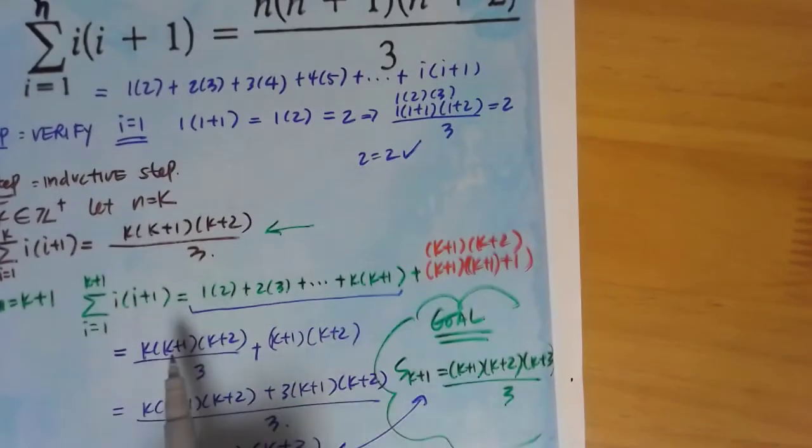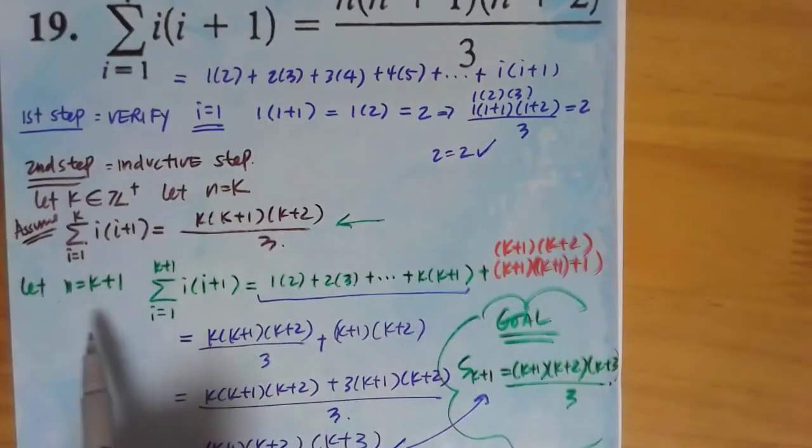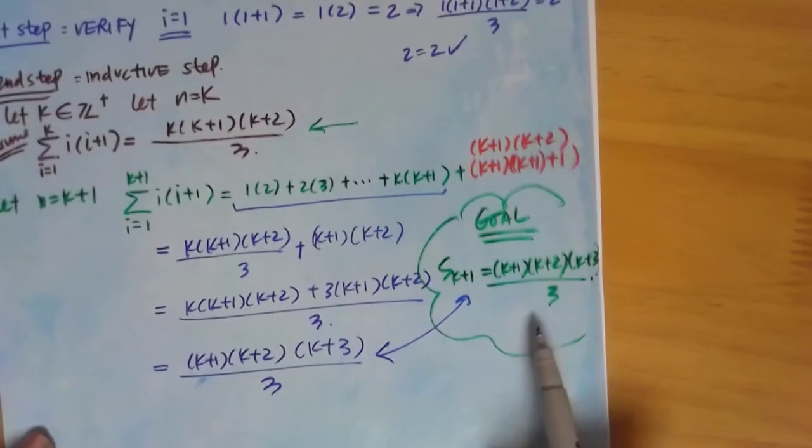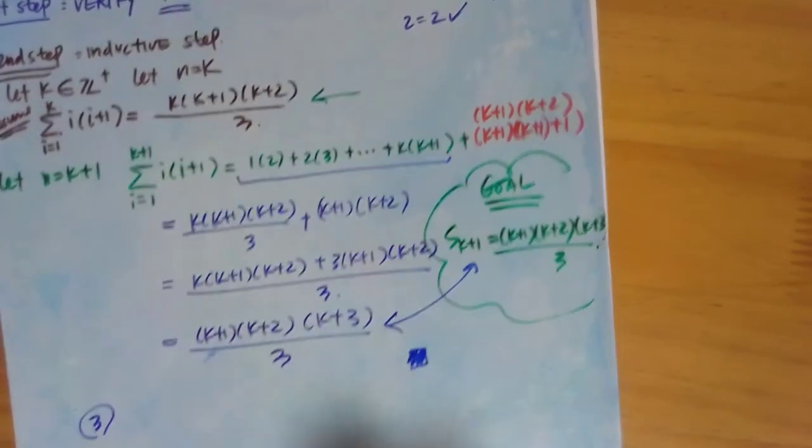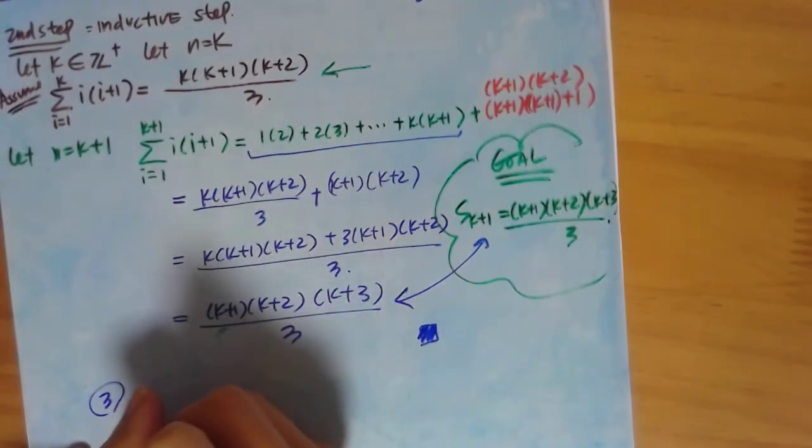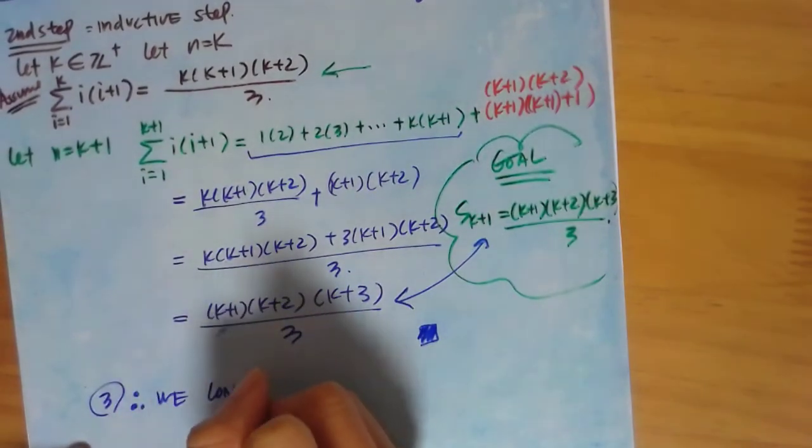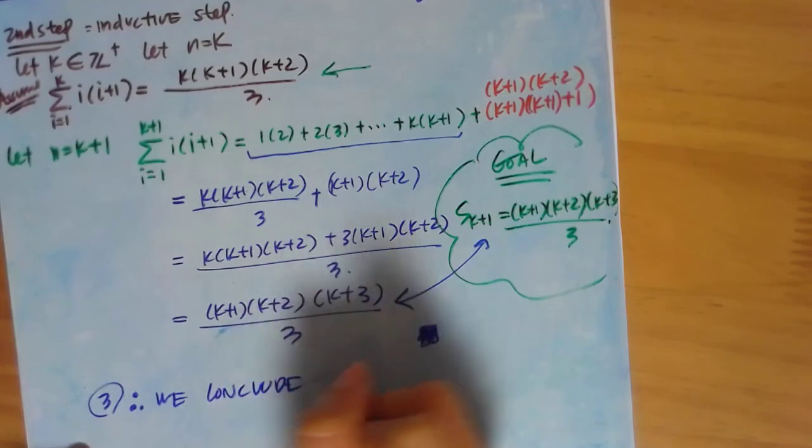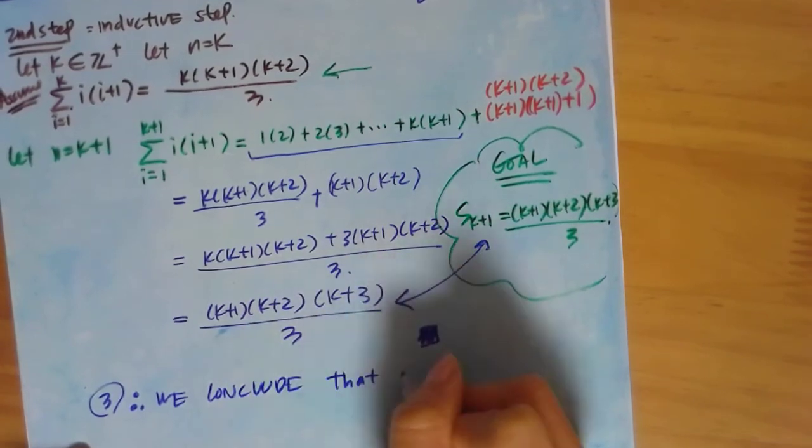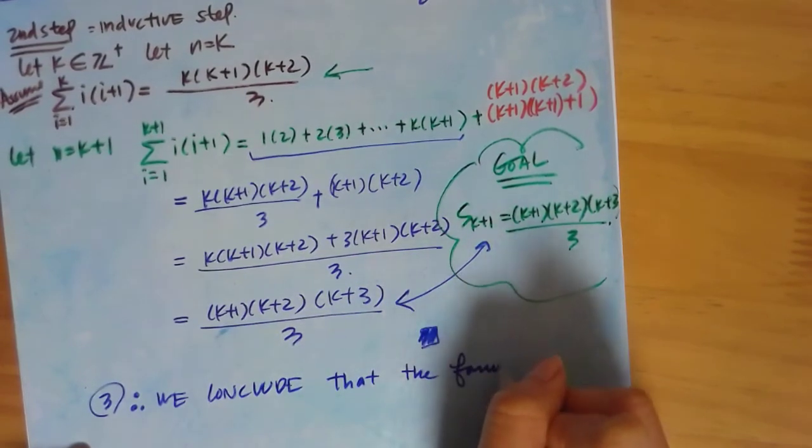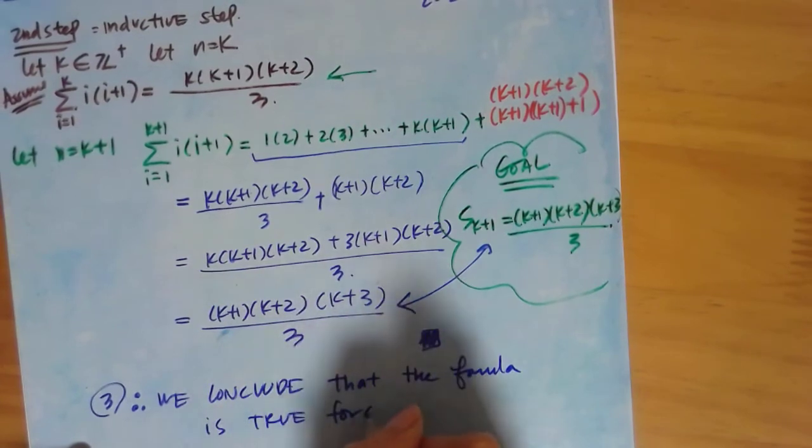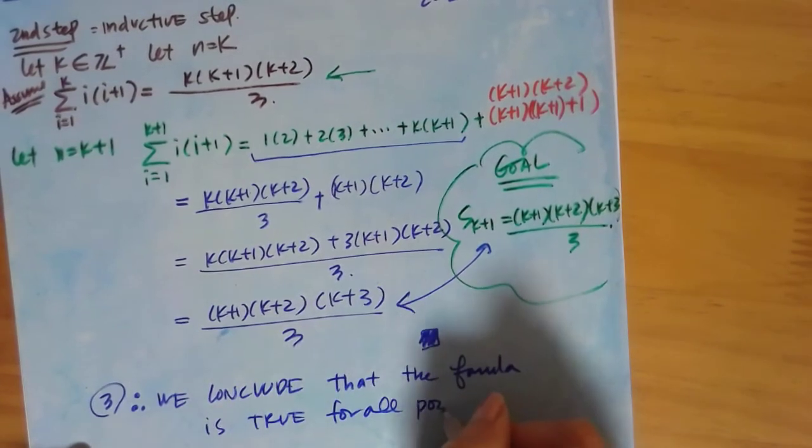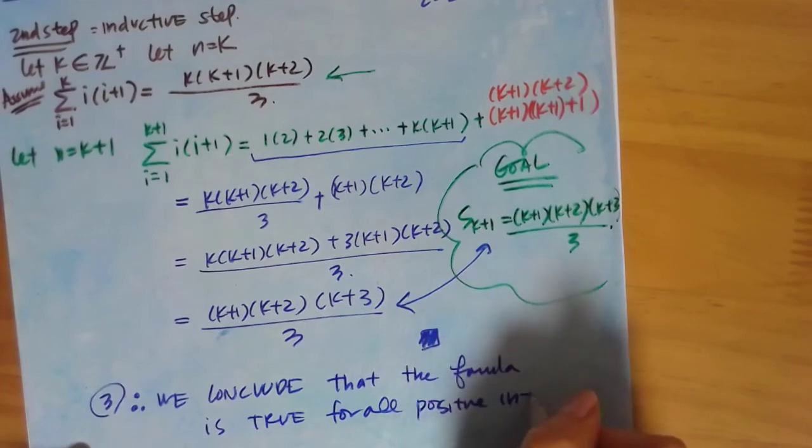So again, we proved that using PMI, that when you have the next term, the k plus 1, that it does indeed equal that. So now we're done with this. So we have to write a third step, which is our conclude. Therefore, we conclude that the formula is true for all positive integer n.